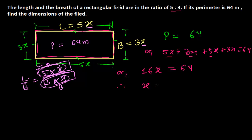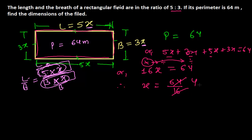Therefore X equals 64 divided by 16. Since 16 is multiplying X, it moves to the other side as division. We know that 16 multiplied by 4 equals 64, so X equals 4.